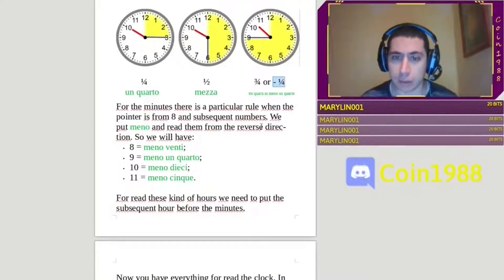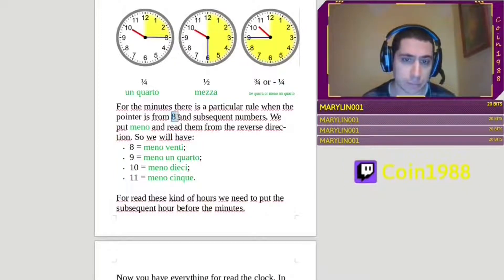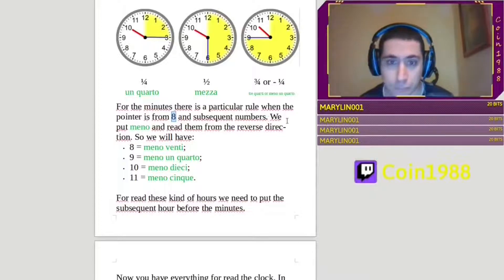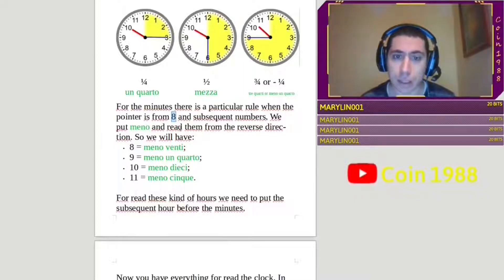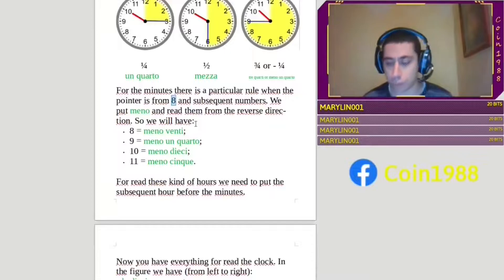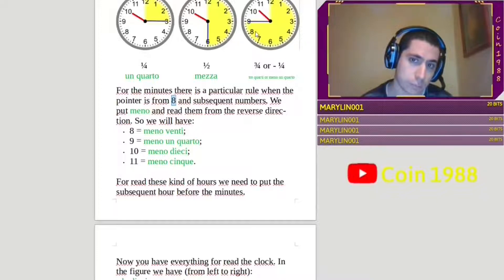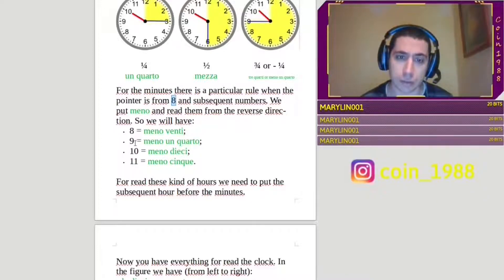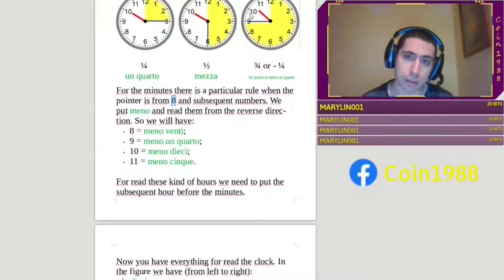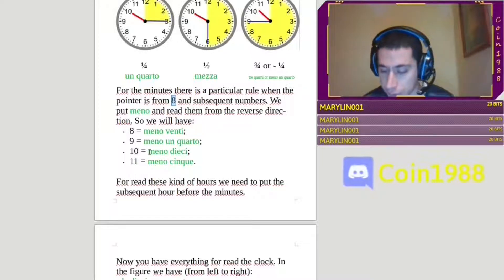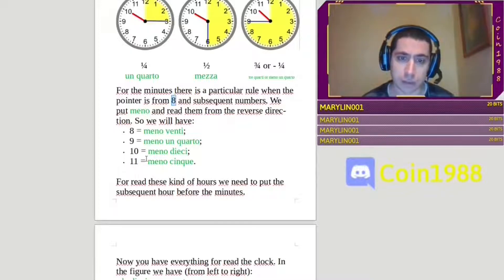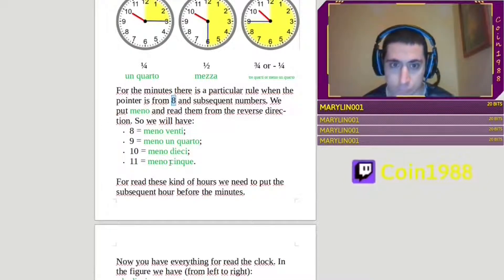For the minutes, there is a particular rule when the pointer is from 8 and subsequent numbers. We put meno and read them from the reverse direction. So, we will have, when the minute pointer is on 8, we will say meno 20, because we count from 12 to 8, but in reverse way. If the pointer is on number 9, like this, we have meno un quarto. If it is on the 10, we say meno 10. If it is on the 11, we say meno 5.